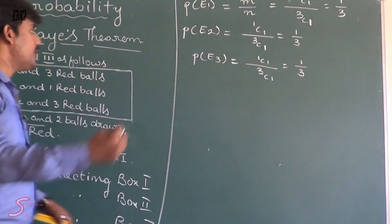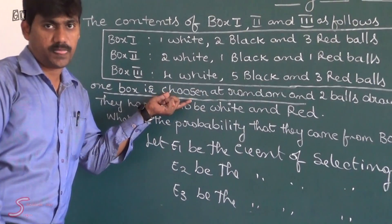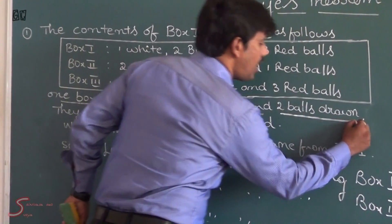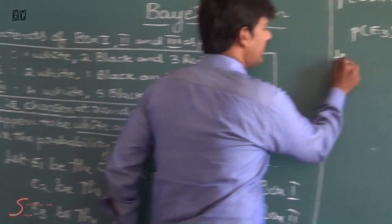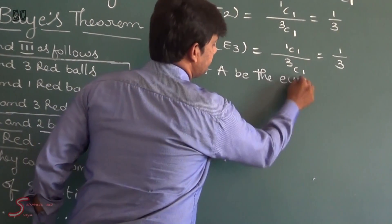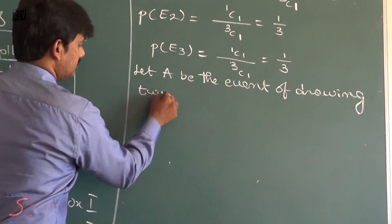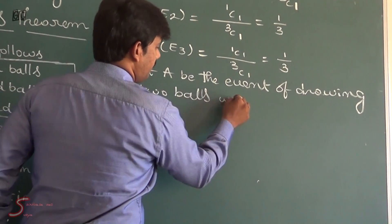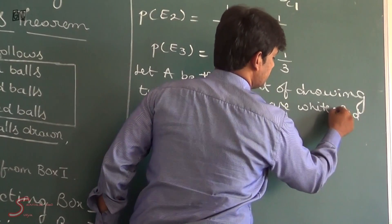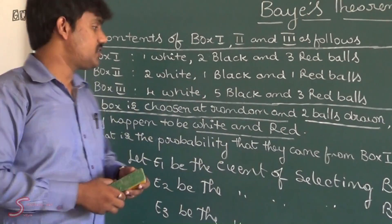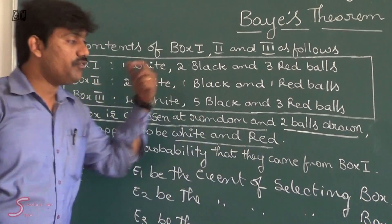So the first part is over — we have to select a box from the three boxes. Now we will move on to the next part. We have to draw 2 balls, and those 2 balls should be one white and one red. Now I am going to define event A: let A be the event of drawing two balls which are white and red.